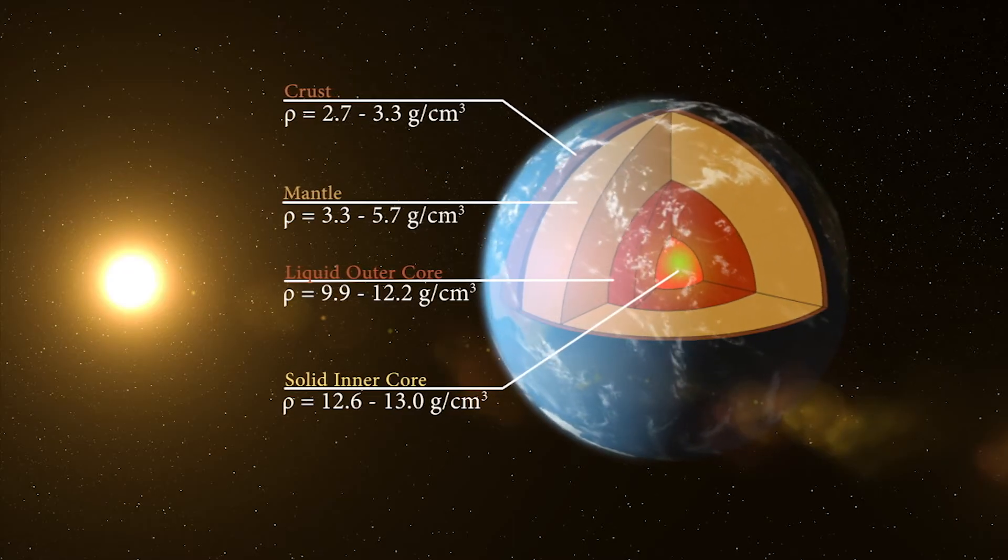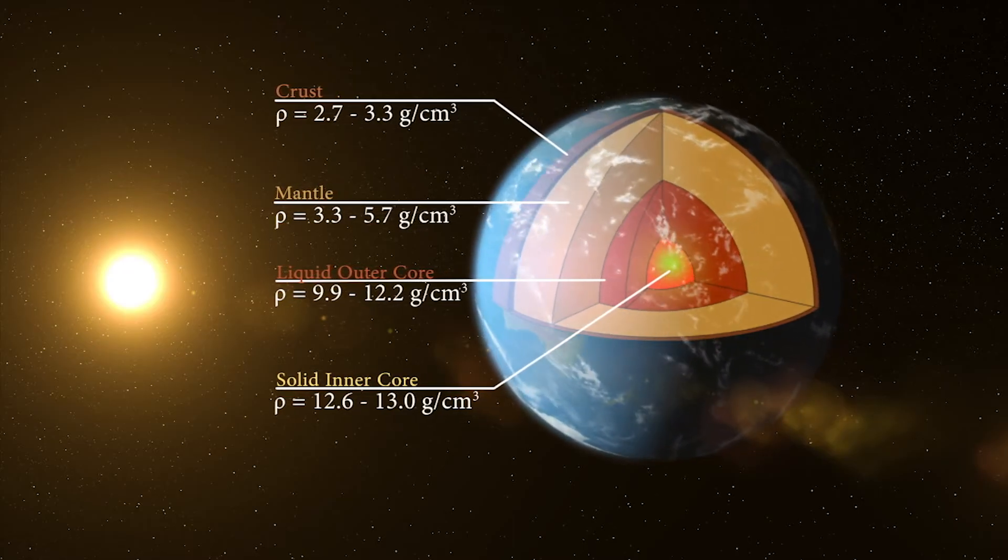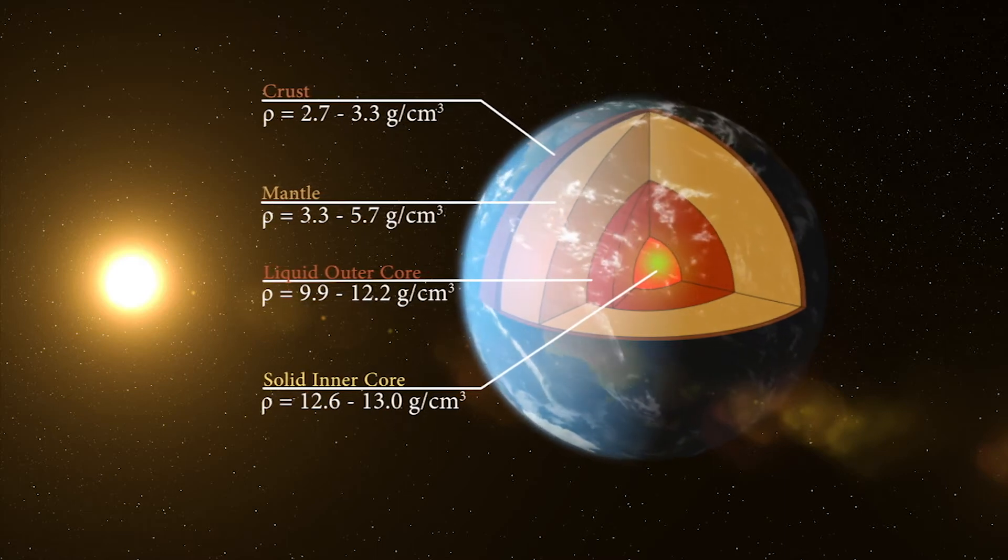However, the density of Earth's crust is less than 3 grams per centimeter cubed, so there must be much denser material in the interior of Earth.